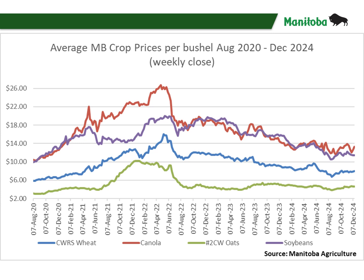This chart shows the average Manitoba crop prices per bushel from August 2020 to current prices in December 2024. It's important to remember that these prices represent weekly close and don't contain the intraweek or intraday highs or lows for grain prices. As we can see with these four crops — hard red spring wheat, canola, oats and soybeans — prices in late 2020 increased until mid-2022. Since then, grain prices have come down steadily.